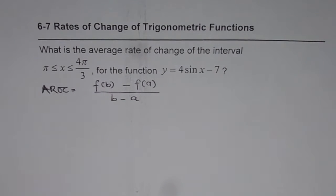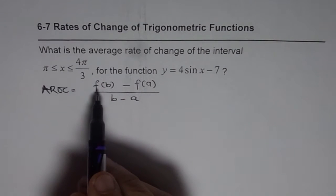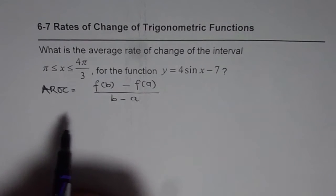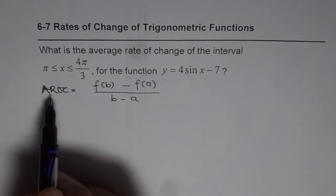So that is what the formula is. We will use calculator to find what is the value at π, what is the value at 4π/3, and then we will use the formula to find average rate of change.